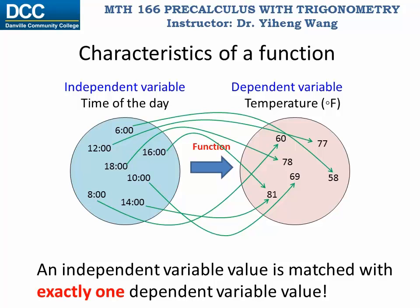At any given time there is one and only one temperature. But one dependent variable value can be matched with more than one independent variable values. For example, the temperature 81 degrees is matched with two times, which means that at two different times the temperatures are the same, and this is perfectly reasonable. Also, the collection of all the allowable independent variable values is known as the domain for this function, and the collection of all the resulting dependent variable values is known as the range for this function, which we will talk about more in a later video. Thank you.